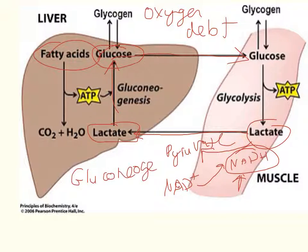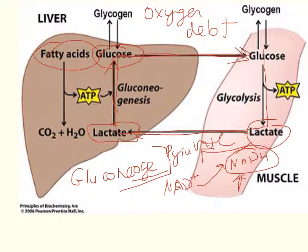The process of creating glucose from smaller molecules is gluconeogenesis. This whole cycle — breaking down glucose to lactate, sending it to the liver, building it back up to glucose, and sending it back to the muscles — is called the Cori cycle.